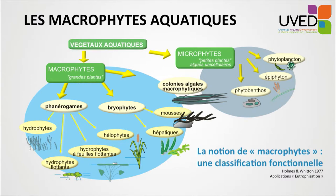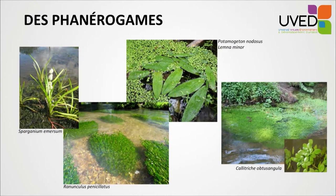Bryophytes are also included in the macrophytes class, with hepatics and mosses. There are also colonies of algae made of unicellular organisms that can be seen because they are gathered together, so they are considered as macroscopic plants.